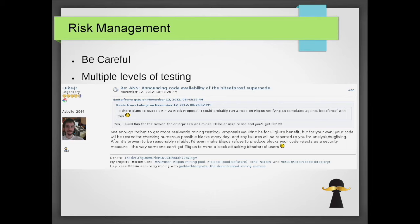BitsApproof was the first serious attempt to make a full stack reimplementation that would mine. It was written in Java. This is also the last time in history that the Bitcoin Core developers were cooperating with anyone at creating multiple implementations. This is a very good thread to read for historical reasons — find it and read it from top to bottom, watching the attitudes of the developers change. Early on, Luke Jr. identified a great way to reduce the risk of multiple implementations. He offered to run BitsApproof alongside Bitcoin Core because he was running the Eligius mining pool. He said: after it's proven to be reasonably stable, he'd make Eligius refuse to produce blocks that BitsApproof rejects, as a security measure — so somebody can't get Eligius to mine a block attacking BitsApproof users.